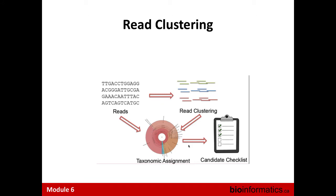Once we have our reads and have accounted for contamination, we don't yet know which organisms they may be derived from. The first step is to cluster reads together into similar clusters. For people familiar with 16S metagenomics, this is like OTU generation — at a similarity cutoff of say 98–99%, we assume reads are from the same organism, cluster them into groups of highly similar sequences, take a representative, analyze it, and assign its taxonomic assignment to everything in the cluster.